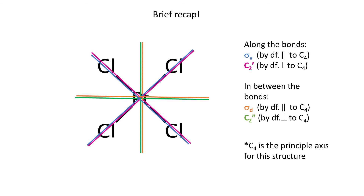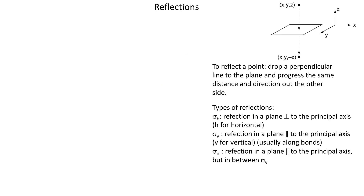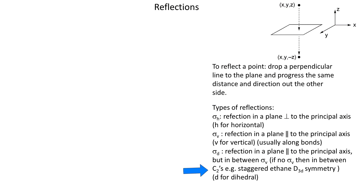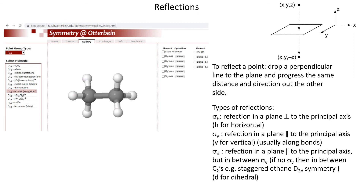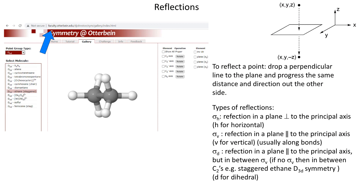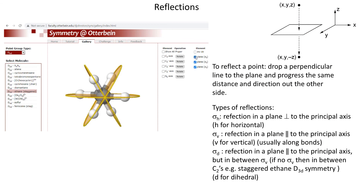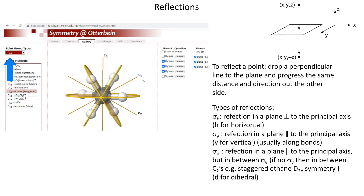Here is a top projection of tetrachloroplatinate 2 so the vertical planes look like lines. Along the bonds we have sigmas called sigma vertical, and in between the bonds we have sigma dihedral. Notice that C2' axes are also located along the bonds and C2'' axes are in between the bonds. In case when a molecule has only one type of sigma and they are in between C2 axes, these reflection planes are also called dihedral — characteristic of D and D-type symmetry.